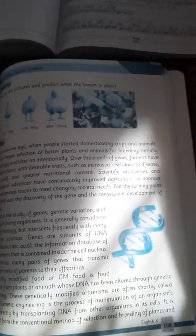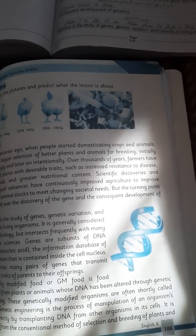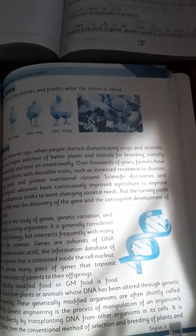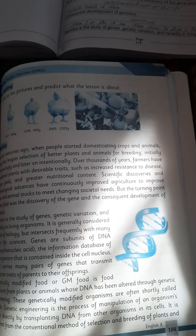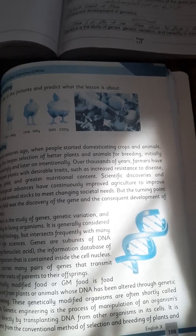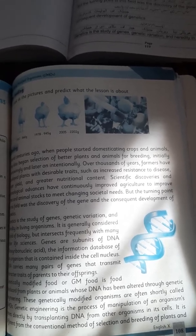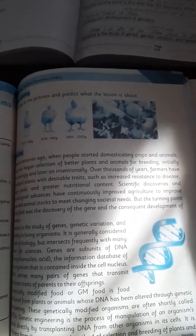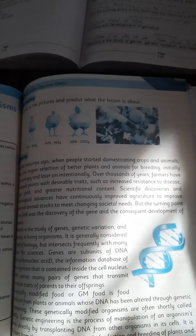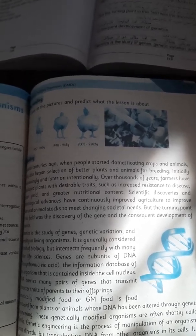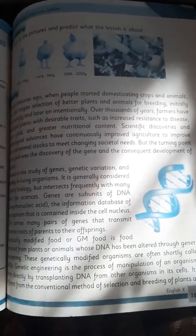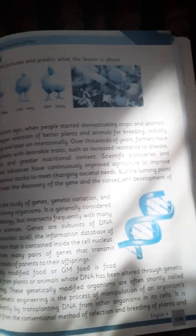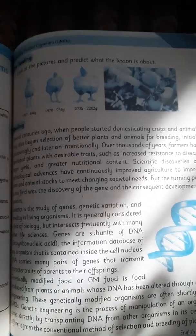Several centuries ago, when people started domesticating crops and animals, they also began selection of better plants and animals for breeding, initially unknowingly and later on intentionally. In the beginning it was unwillingly, unknowingly, and later on intentionally. Over thousands of years, farmers have developed plants with desirable traits.